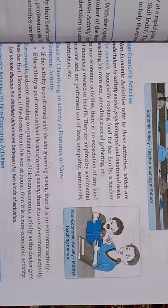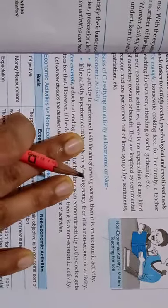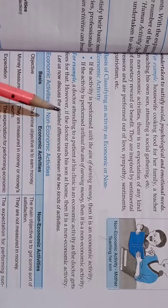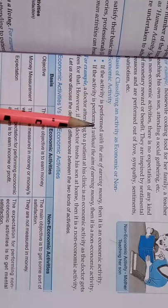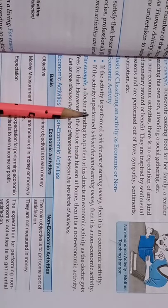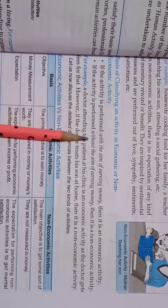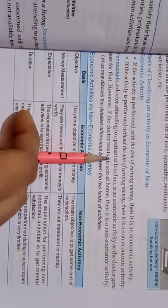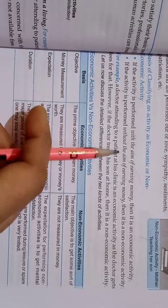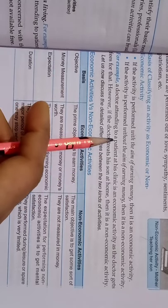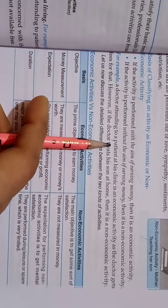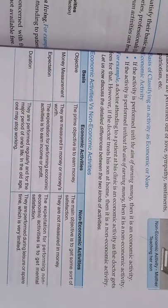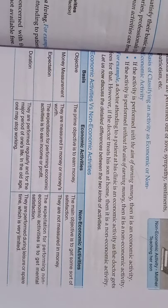Economic and non-economic activities were covered in the previous video. Now we are taking their difference again so that it brings more clarity. Economic activities are performed with the aim of earning money, and non-economic activities are performed without the aim of earning money. For example, if a doctor is attending a patient at his clinic, he will charge fees — so he is performing this activity to earn, making it an economic activity. But if a doctor is treating his own son, he is not treating him to earn a fee; he wants his son to get well, so that is not an economic activity.